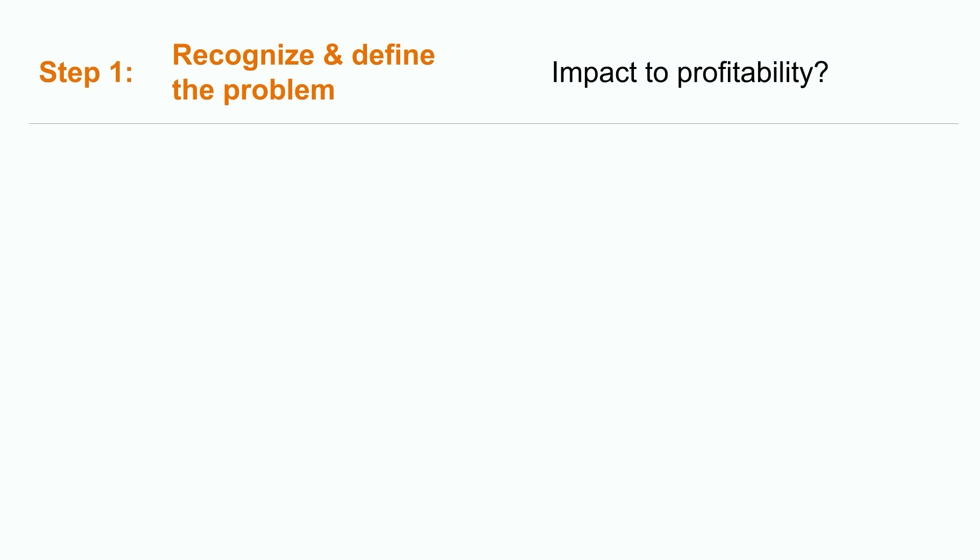The first step is to recognize and define the problem. ABC's management team is faced with the decision on whether or not to accept the contract for this one-time special order. They need to determine the impact it will have on their operations and relationships with their customers. Before coming up with a solution, the central question here is: what will be the impact to the company's profitability if they were to accept this order?